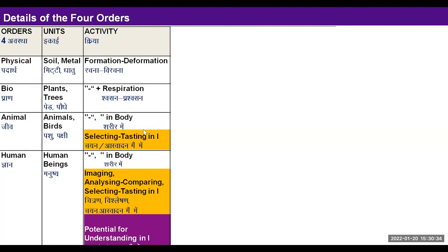We studied the four orders of nature briefly in the previous session. Now I will detail upon various realities associated with the four orders. Going further to study each of these orders, we can study the activity — so what is the activity in the physical order? All activities in the physical order can be clubbed into two parts: formation and deformation.